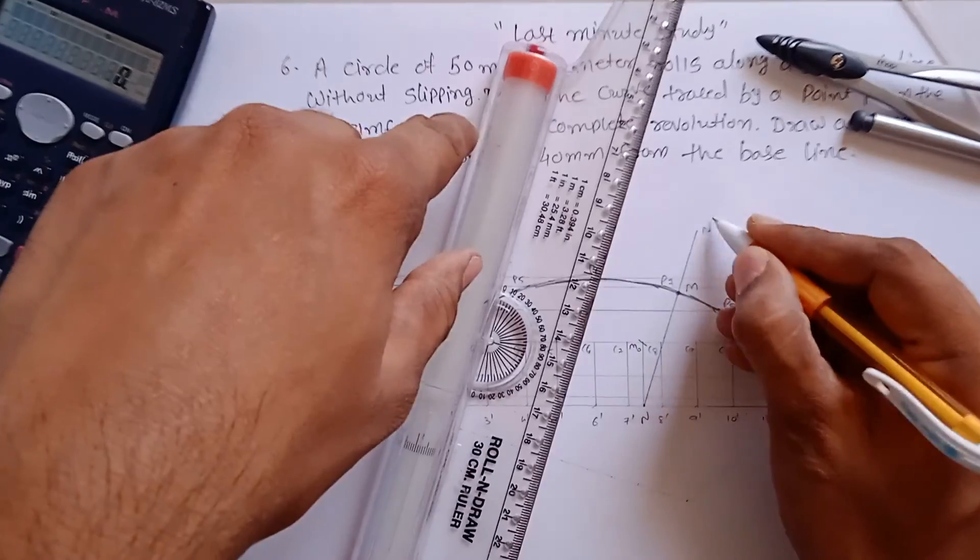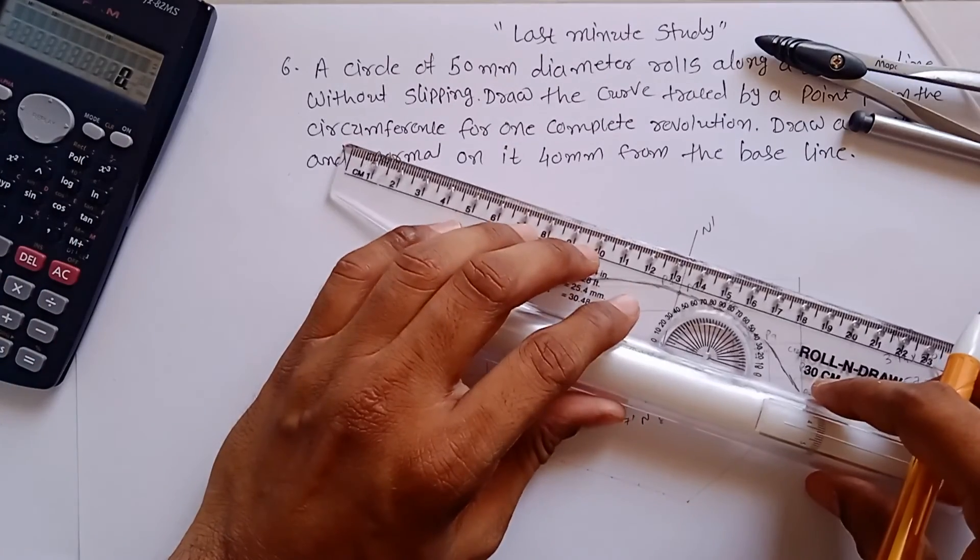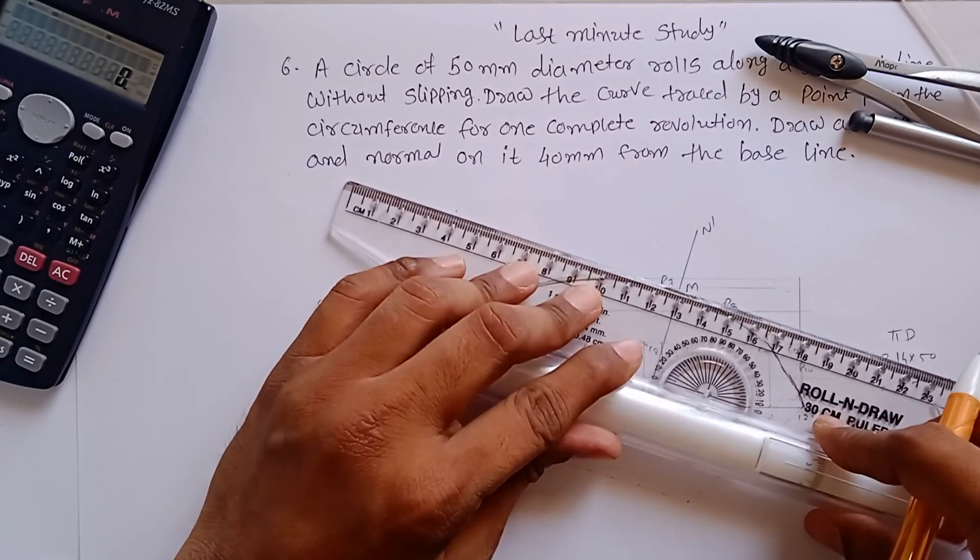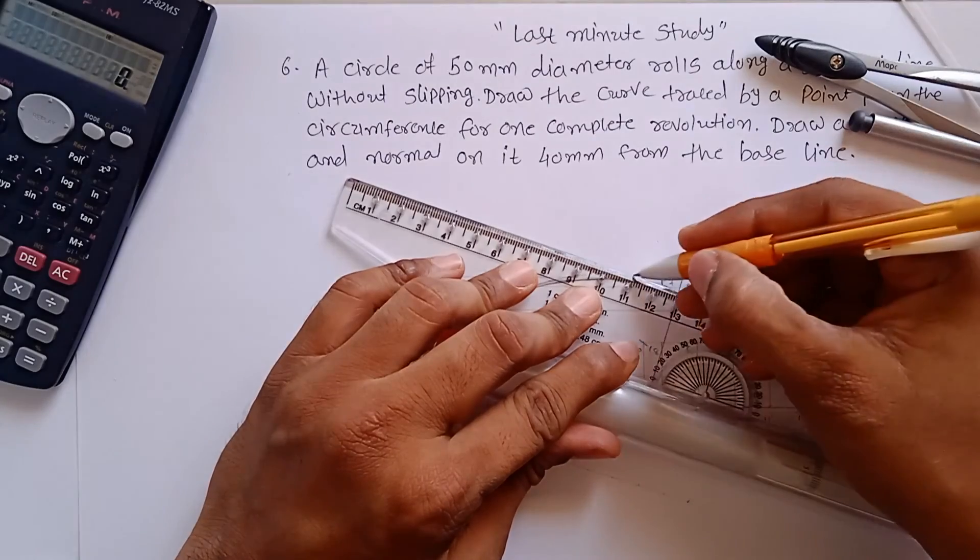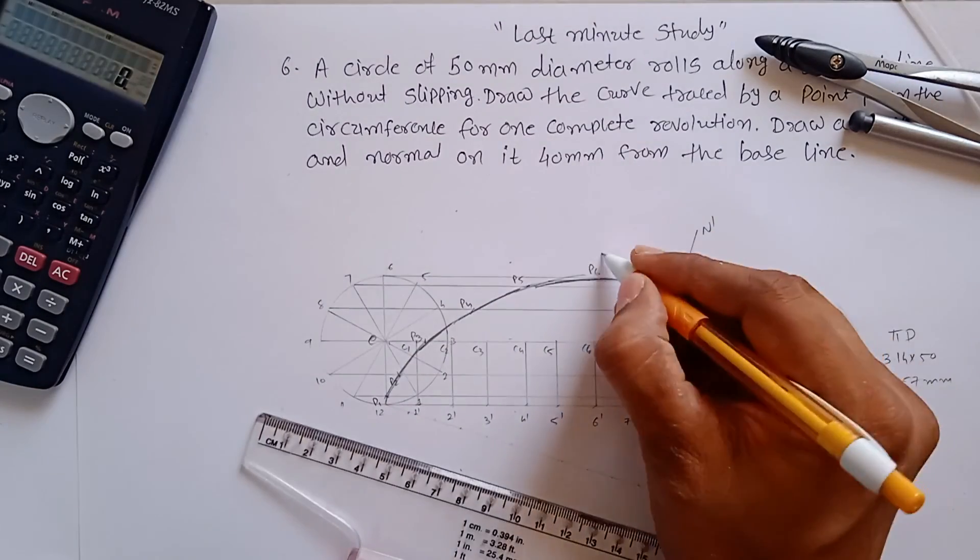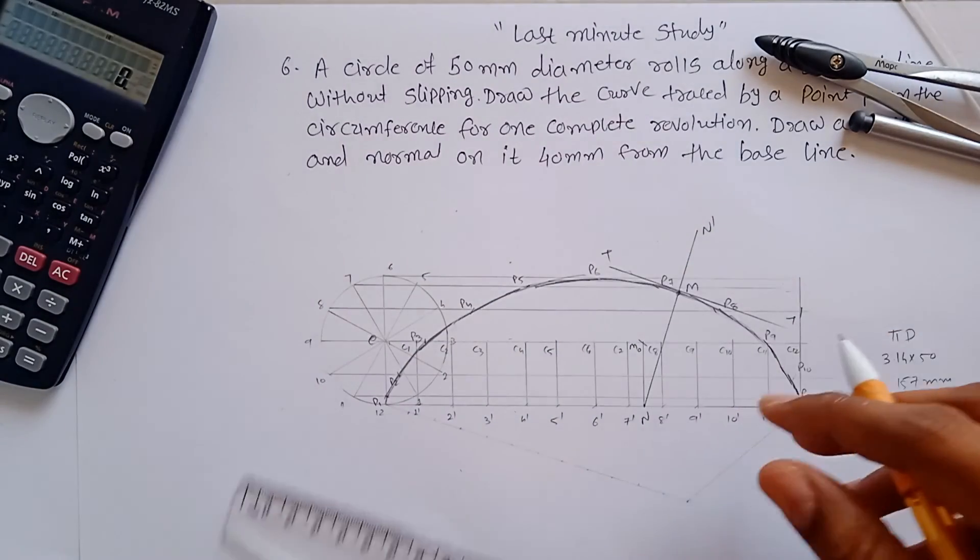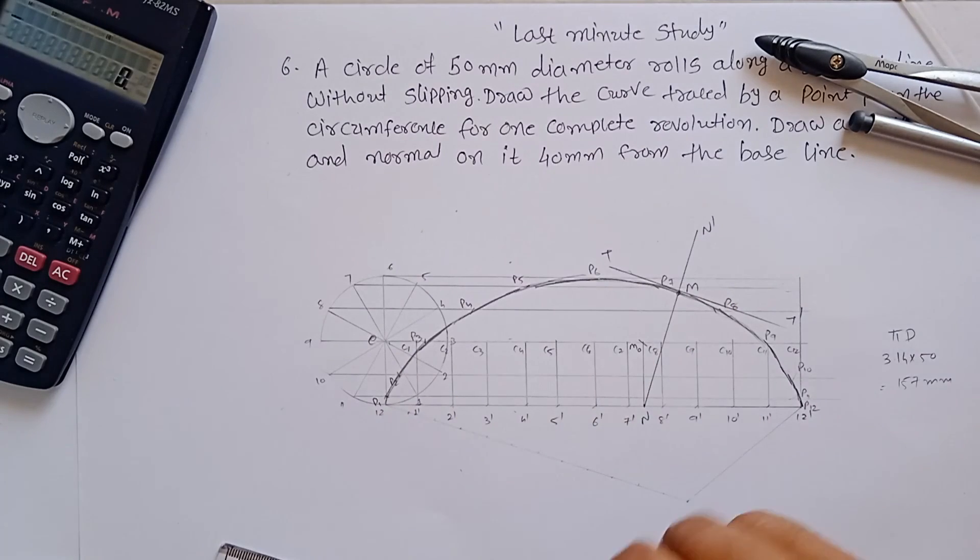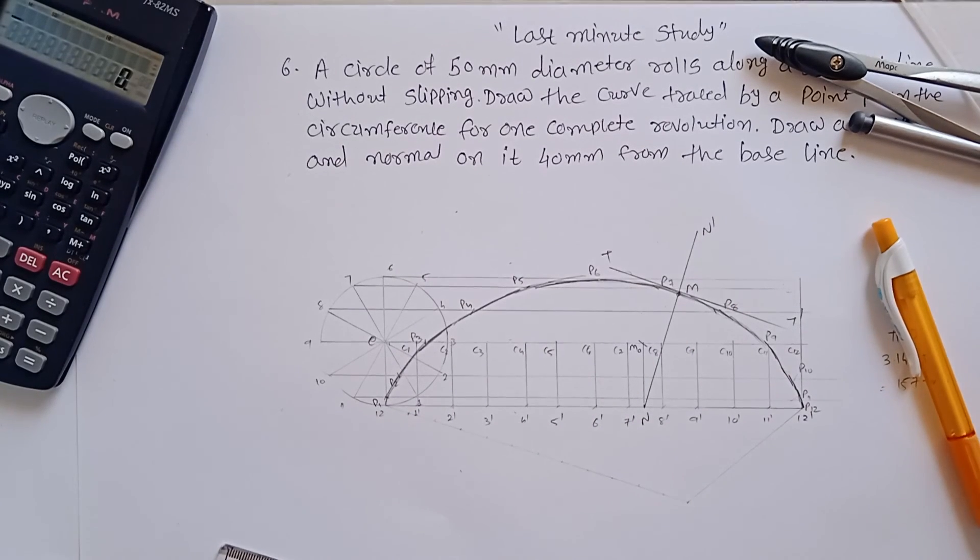So this is your normal, and perpendicular to this gives you tangent. This is cycloid, and T2 is tangent.